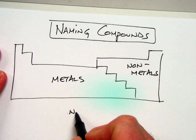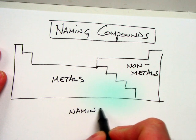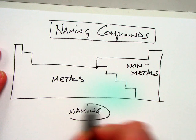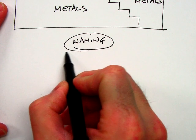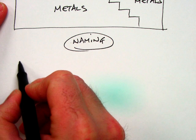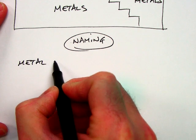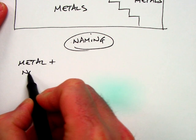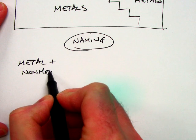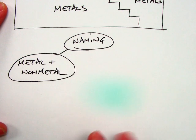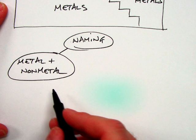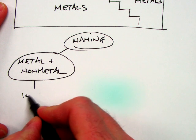So when we're going to try to name compounds, that's the first thing we want to recognize. One type of formula you're going to see is if you have a metal plus a non-metal. So hopefully from our previous unit, when you have a metal and a non-metal, you want to recognize that's an ionic compound.